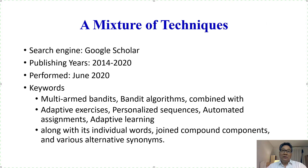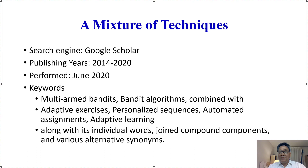The search strategy in this survey is a mixture of techniques. Google Scholar was used as a search engine. 2014–2020 was chosen as the publishing years, and we performed the survey in June 2020. We used keywords such as multi-armed bandit algorithms combined with adaptive access, personalized sequences, automated assignment, and adaptive learning, along with individual words, components, joint compound components, and various alternative synonyms.